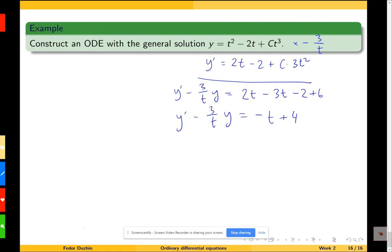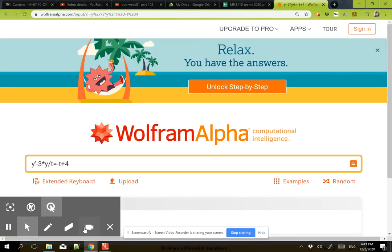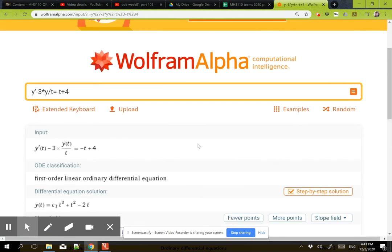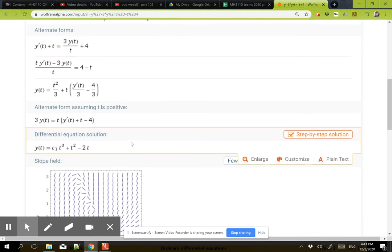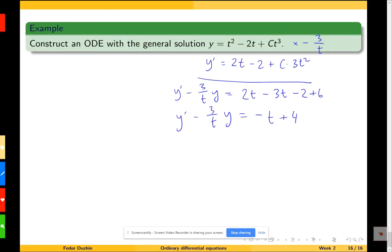And then Wolfram Alpha is going to solve it. So t² - 2t + C times t³. So t² - 2t + Ct³. Correct.